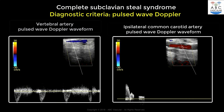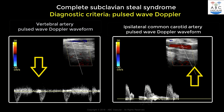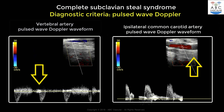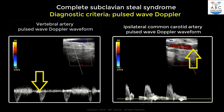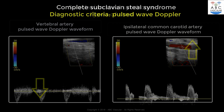When we compare the vertebral artery Doppler waveform with that obtained from the ipsilateral common carotid artery, we can see that the directions of the waveforms are opposite to each other. The vertebral artery waveform is below the baseline, while that of the common carotid artery is above the baseline.